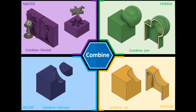We're going to start off by looking at the join, the cut, and the intersect — those are the basic functions of this feature. Then if you check out my other videos, you'll see we'll have a look at creating two different types of molds using the combine feature as well. If you'd like a copy of any of the completed models, please check the link in the description below and we'll jump straight into Fusion.